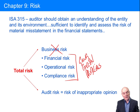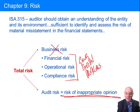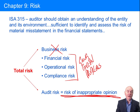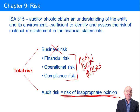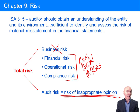What we're concerned about in F8 is what's called audit risk, and this is the risk of an inappropriate opinion. In other words, the auditors say that the financial statements show a true and fair view — meaning the financial statements do not, in the auditor's opinion, contain a material misstatement — when in fact they do. So you've given a clean audit report when it should have been qualified or perhaps adverse.